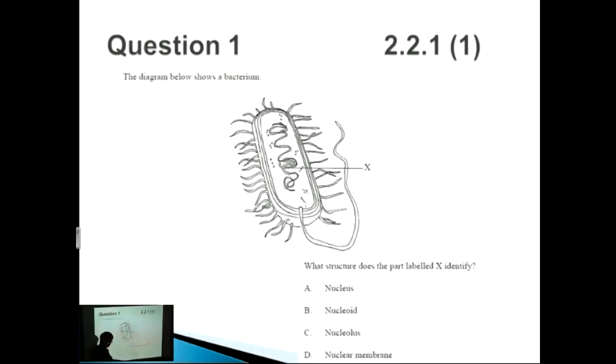They've given us a variety of different options that start with N: nucleus, nucleoid, nucleolus, or nuclear membrane. If you go back to your prokaryotic and eukaryotic cell differences, then we know that one particular difference is that prokaryotic cells have naked DNA and they're not actually bound by a membrane. You've just got free DNA floating around in the jelly of the cytoplasm.